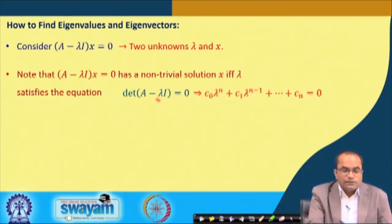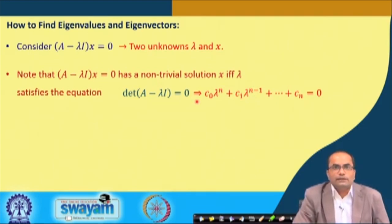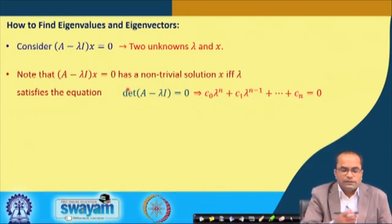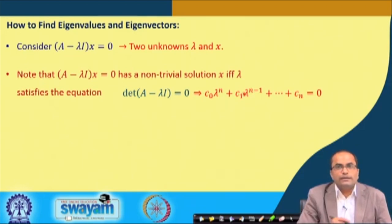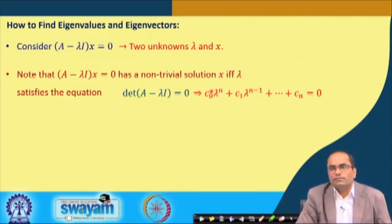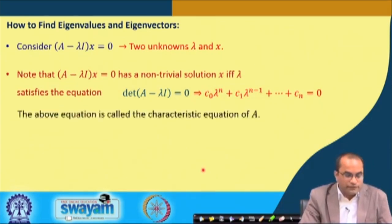When we expand this determinant, we get a polynomial equation: c₀λⁿ + c₁λⁿ⁻¹ + ... + cₙ = 0, where the coefficients are determined by the matrix A. This is called the characteristic equation of the matrix A. Solving it gives us at most n roots — the eigenvalues — which may be distinct or repeated, real or complex.